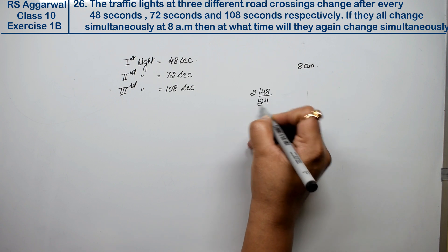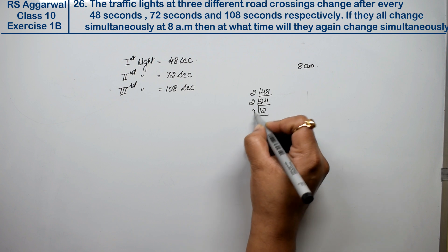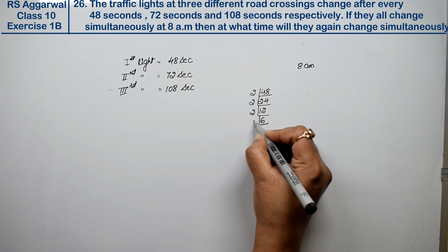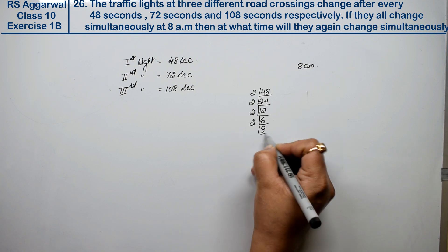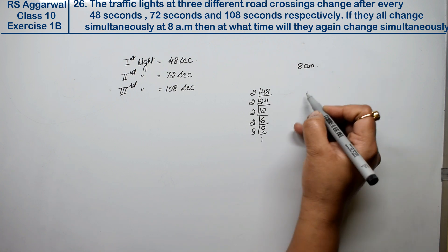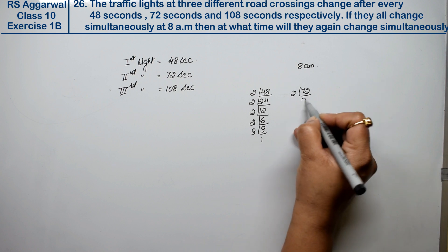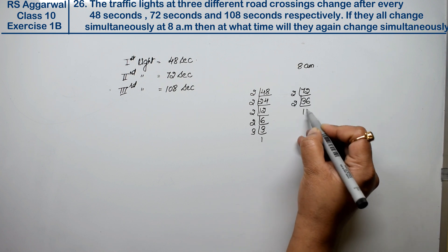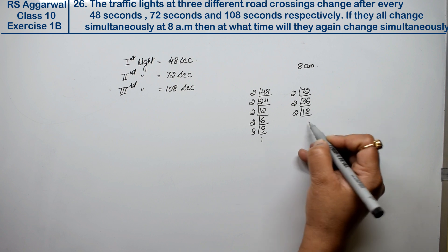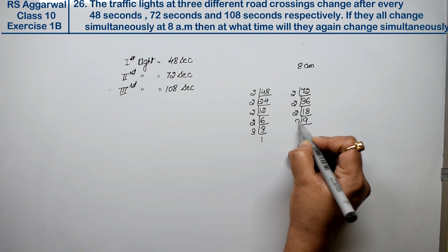For 48: 2, 24, 12, 6, 3, 1. That gives us 2, 2, 2, 2, and 3. For 72: 2, 36, 18, 9, 3, 1. That gives us 2, 2, 2, 3, 3.